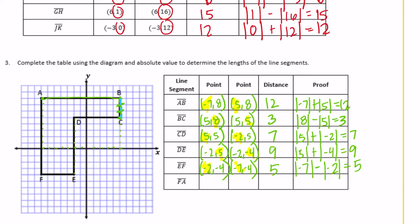Segment FA: F was at negative 7, negative 4 and A was at negative 7, 8. They differ in the y-coordinates and are on opposite sides of 0. We add: absolute value of negative 4 plus absolute value of 8 equals 12. The distance is 12.